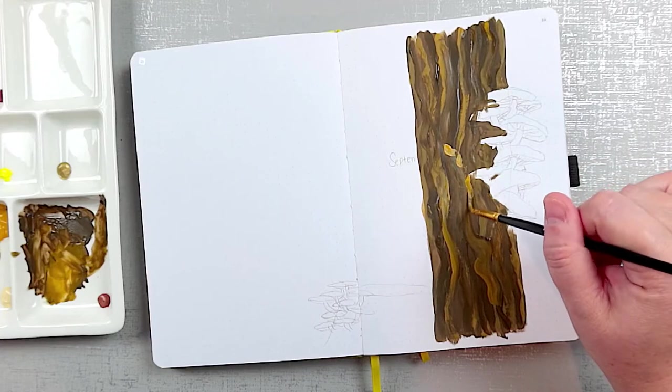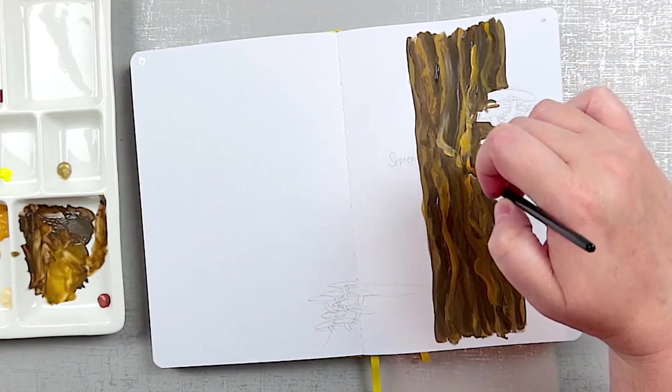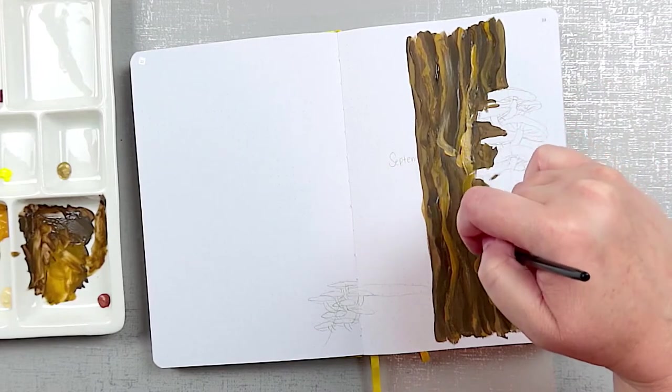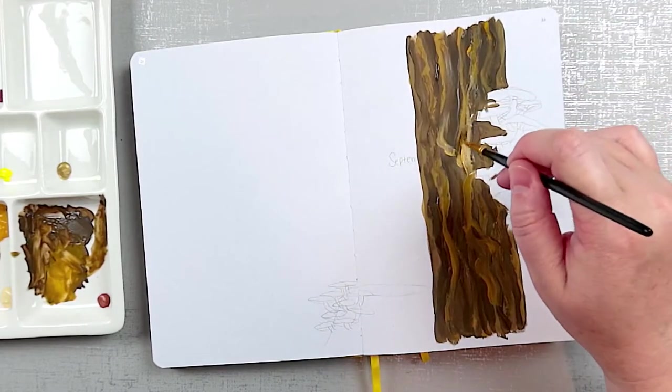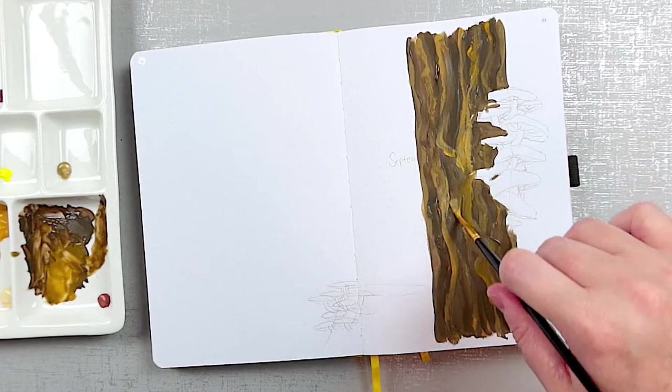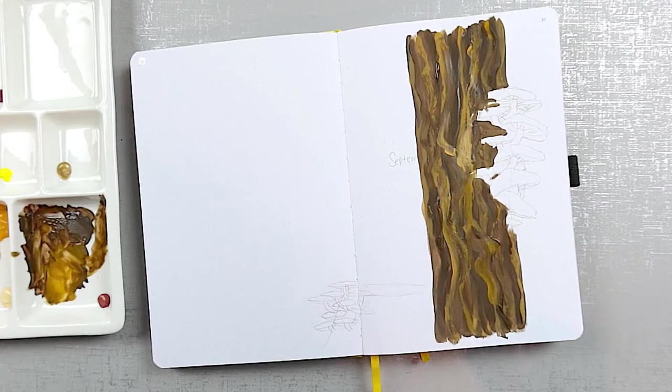Each color I add to the tree trunk now adds texture and depth. I'll hold the number two round paintbrush very loosely, farther up the handle than usual, and as I paint twist the paintbrush around in my fingers so it adds thick and thin squiggly lines up and down the tree trunk.